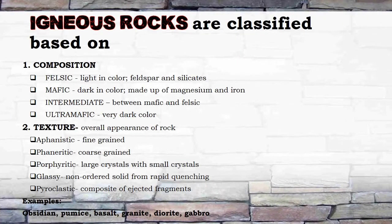Igneous rocks are classified based on the following. One: composition — felsic: light in color, feldspar and silicates; mafic: dark in color, made up of magnesium and iron; intermediate: between mafic and felsic; ultramafic: very dark color. Two: texture, the overall appearance of rock — aphanitic: fine-grained; phaneritic: coarse-grained; porphyritic: large crystals with small crystals; glassy: non-ordered solid from rapid quenching; pyroclastic: composite of ejected fragments.